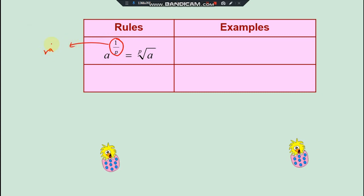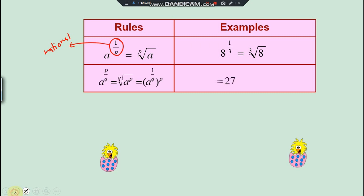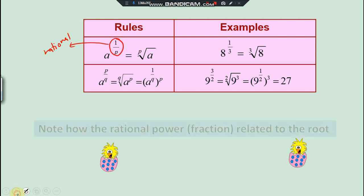So next, what happen if you have a rational index here? It is actually some kind of root of the base. So let's say if you have a power of one over p, is actually the root of a by p. So let's say if you have eight power of one over three, it's actually the cube root of eight, which is two. So same goes with the one at the bottom there.